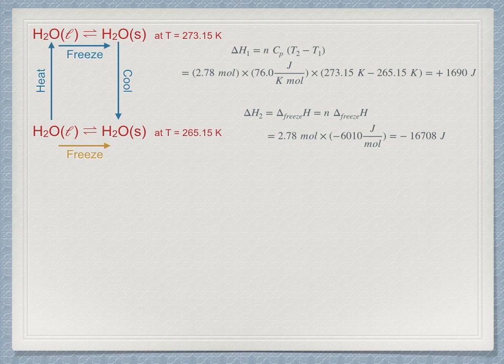The second step is just the enthalpy of fusion multiplied by the moles of material. Be sure to get the sign right. It is freezing, so energy has to be taken out, so it must be negative. We get minus 16708 joules.